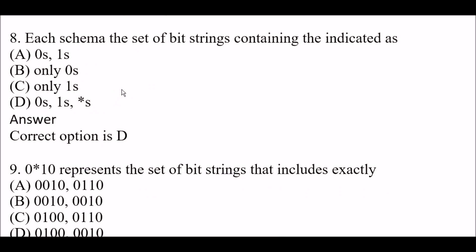Next question: Each schema — the set of bit strings containing the indicators — is indicated as Option A: zeros and ones; Option B: only zeros; Option C: only ones; Option D: zeros, ones, and asterisk (wildcard). Right answer is Option D. Each schema is represented using zeros, ones, and asterisk (wildcard/hash trick).